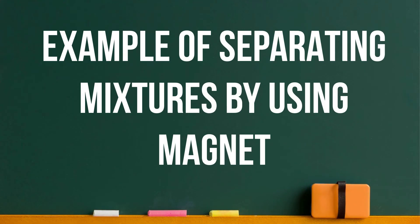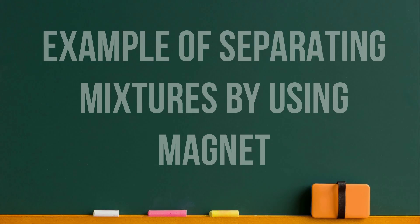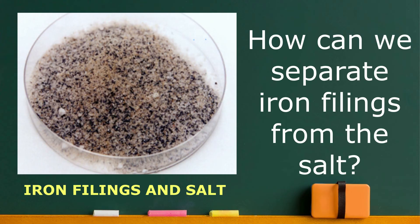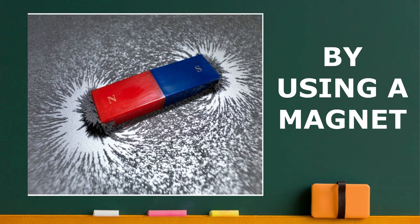Example of separating mixtures by using a magnet: iron filings and salt. How can we separate iron filings from the salt? By using a magnet.